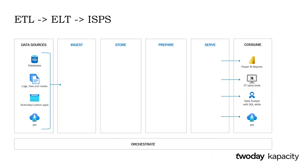But it's completely the same as always. We have extract, we have load, we have transform, and then we load it again and make it available to the consumer. So nothing new here, just new names — ISPS: ingest, store, prepare, serve.